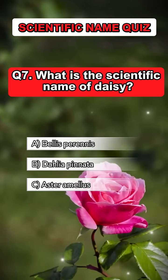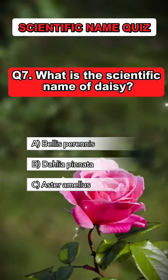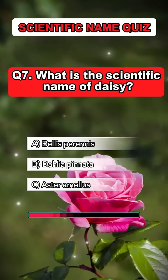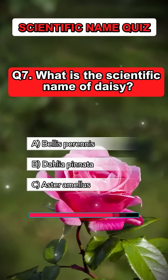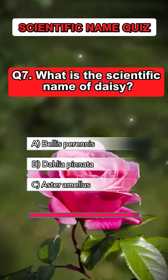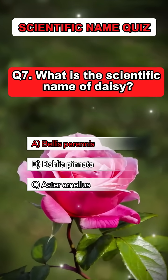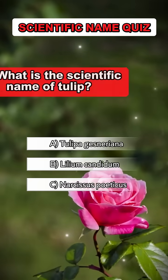Question 7. What is the scientific name of daisy? Answer A. Bellis perennis.